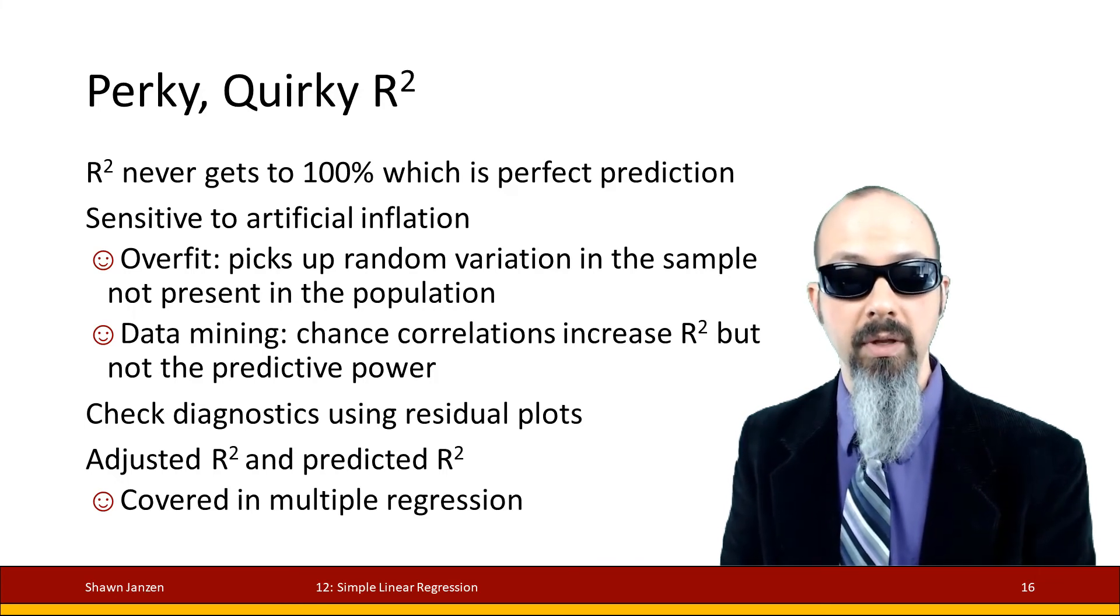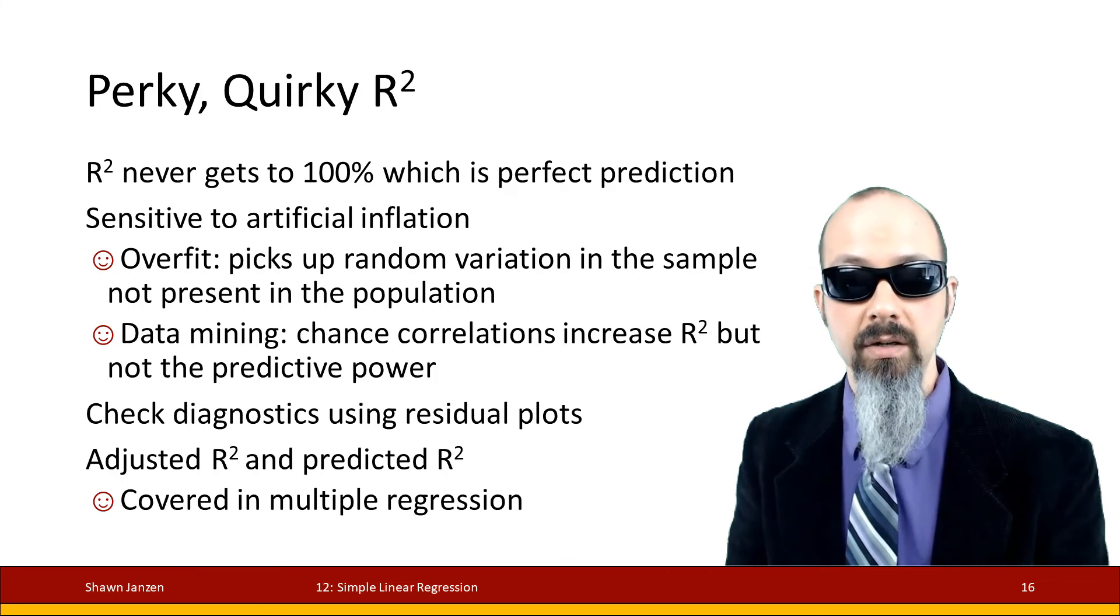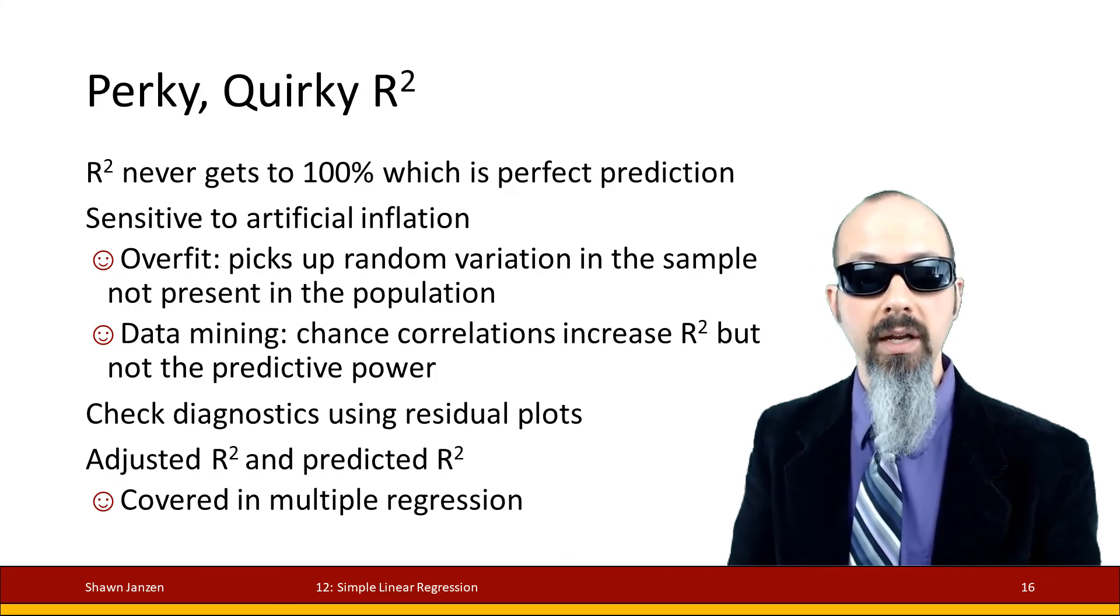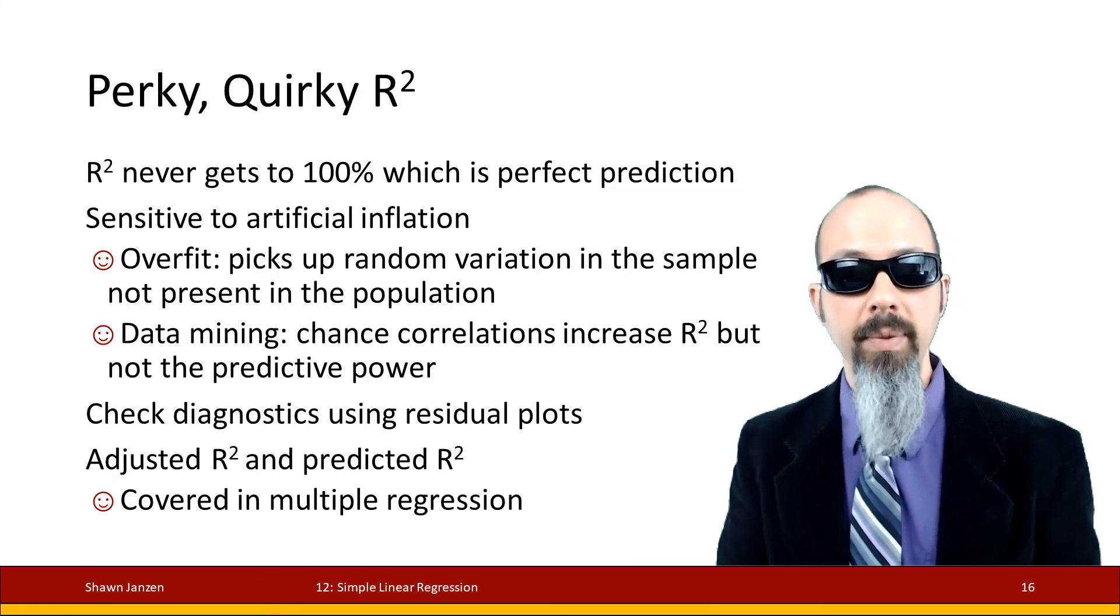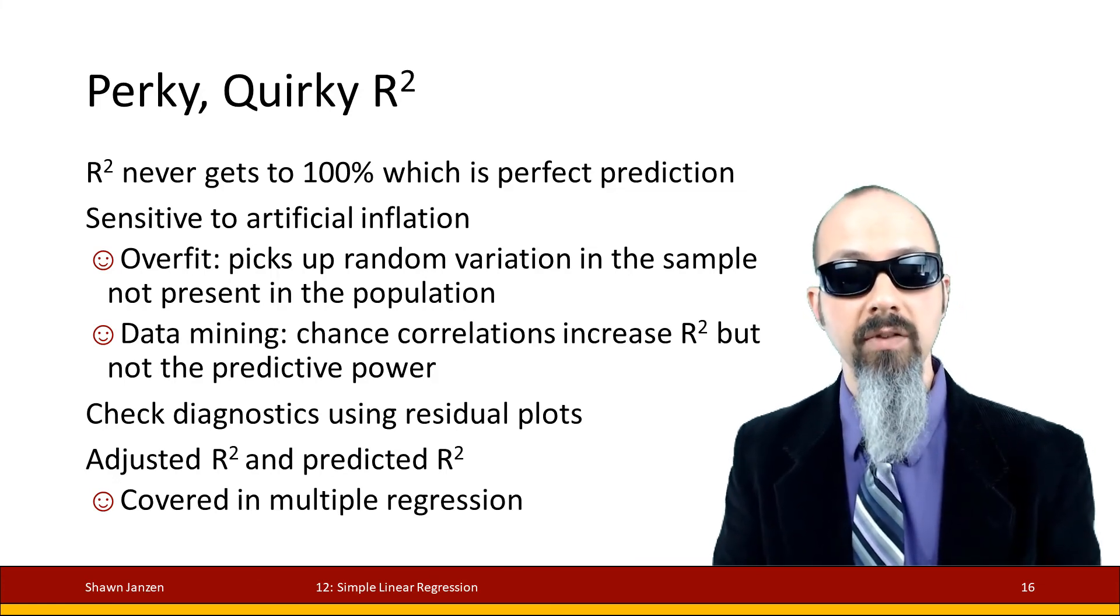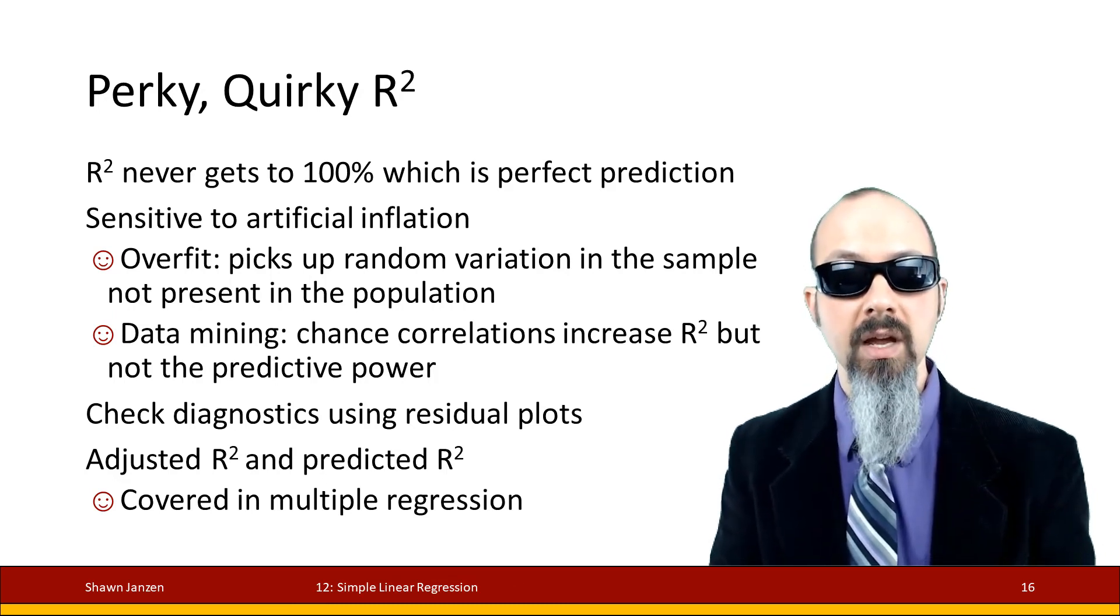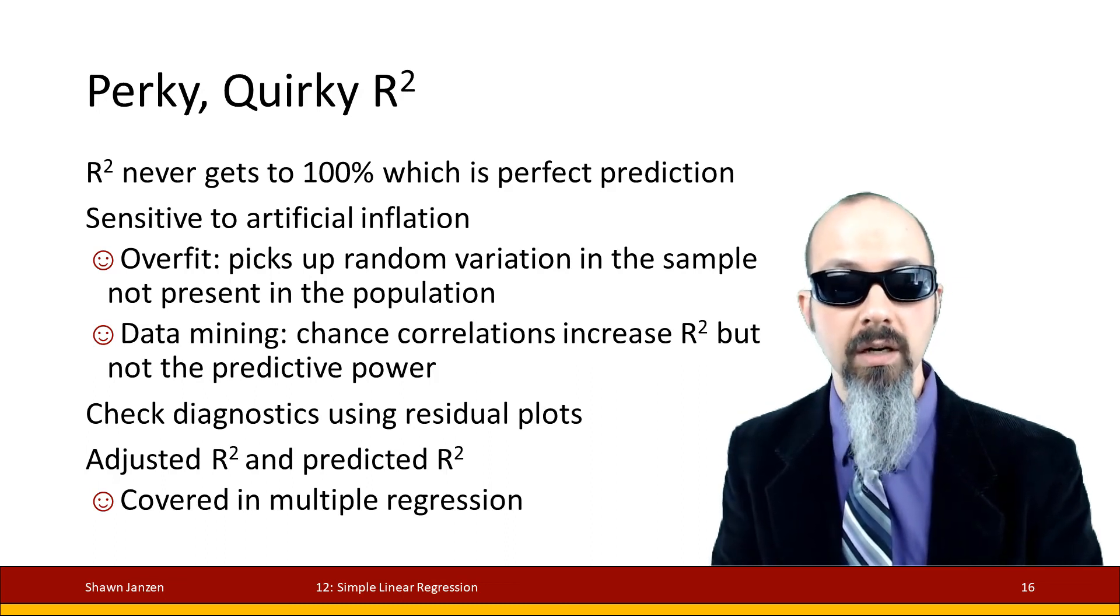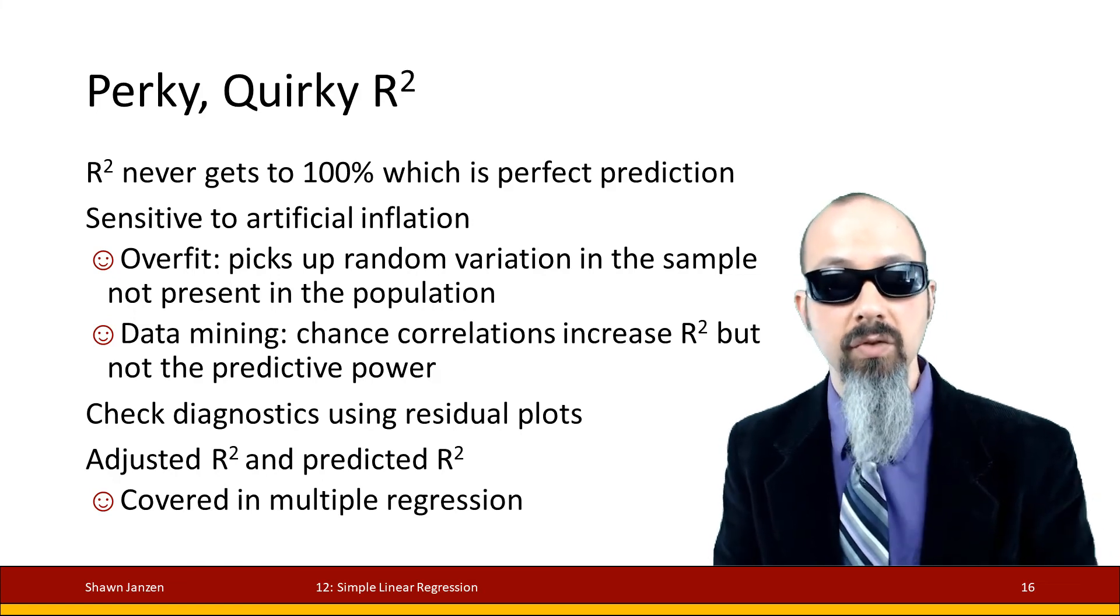You're having more variation being explained in your model because your sample has extra variation that's not represented in the population. Similarly with data mining, data scientists and analysts doing these exploratory analyses are mining for correlated types of values, and they could be coming across correlations that are popping up by chance but not because of causal relationships. That's going to cause them to get these higher R² values that aren't going to come across when they get out to the real world.